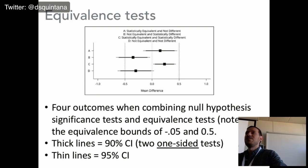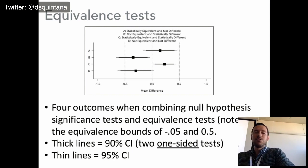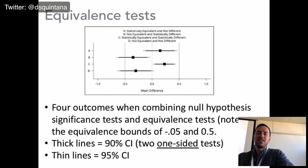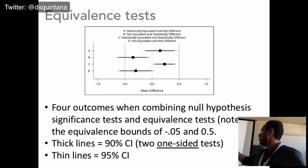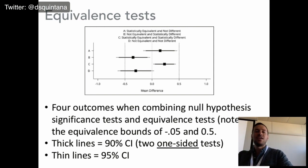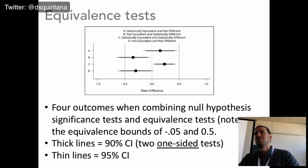The first outcome is that the effect is statistically equivalent and not different. Here we've set our equivalence bounds at minus 0.5 and 0.5, assuming that effects larger than 0.5 are not really meaningful. Because the two thick lines have fallen between these two equivalence bounds, we can say these effects are statistically equivalent. They're not different because the interval crosses zero, but they are also statistically equivalent.